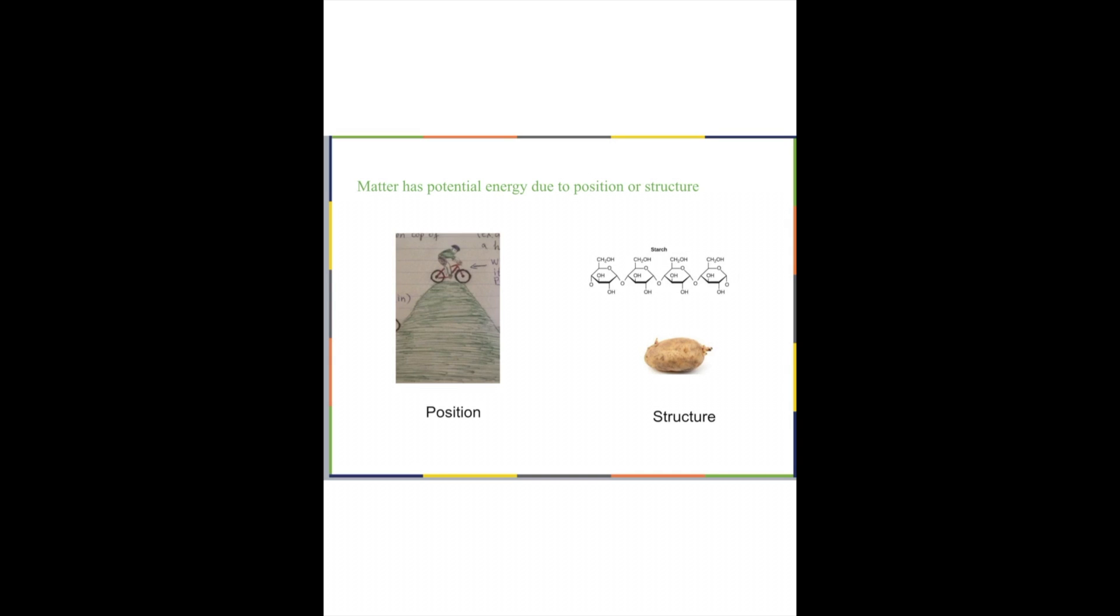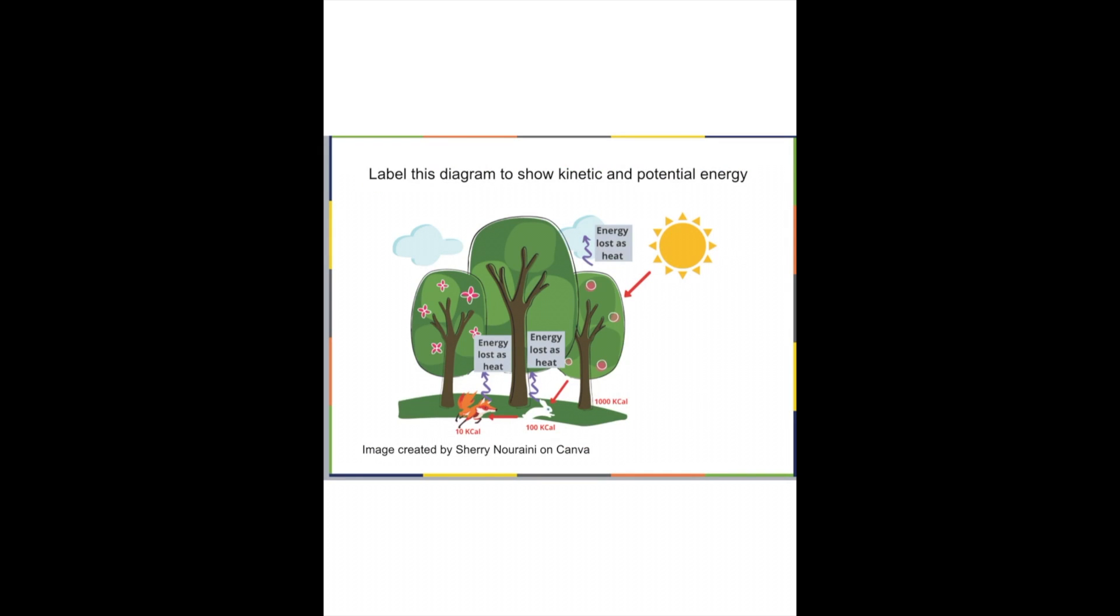So again, we said matter can have potential energy because of two things, its position and its structure. So we talked about this bicycle rider, the fact that it's on top of the hill. It stores potential energy, and then we have this molecule of starch that you usually consume in a potato. Starch is storing chemical energy. And why is it that starch is storing chemical energy? It's because of its structure.